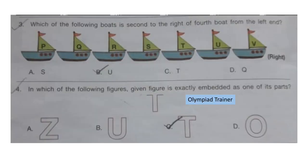Question 3: Which of the following boats is second to the right of the fourth boat from the left end? Look at the arrangement. First, find out the fourth boat from the left end — that is boat S. Now find the second to the right of boat S — that is boat U. So option B, U, is the correct answer.